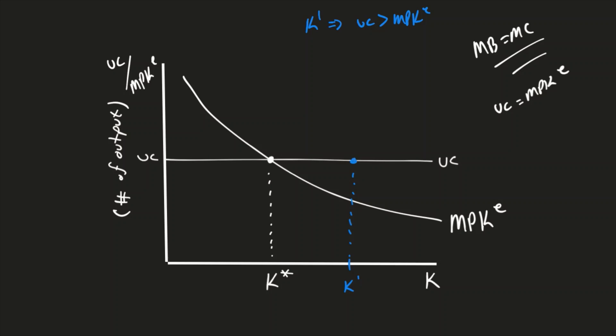User cost of capital is up here, marginal product of capital is lower. So cost is greater than benefit, which means we need to decrease our amount of capital. We'll see this move to maximize profits and get back down to K star. As we decrease our amount of capital, the marginal product of capital starts to increase. The user cost of capital stays the same until we get back to the point that maximizes profits.